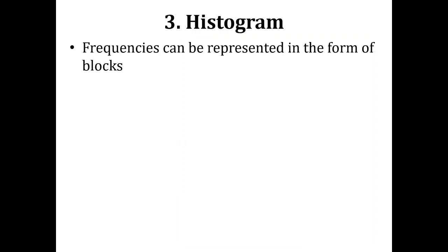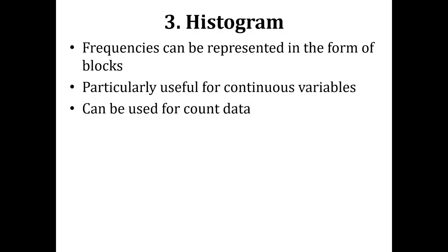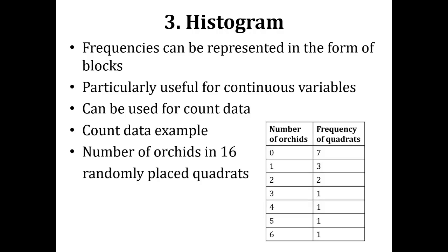After defining those two basic graph types for personal visualization, we now come to the most commonly used type of graph in the presentation of scientific observations — for theses, papers, and presentations. Histograms are the most commonly used type of graph in scientific research. In histograms, frequencies are represented in the form of blocks. Histograms are particularly useful for continuous variables, but are used for count data as well. We take the example of the number of orchids in 16 randomly placed quadrants.